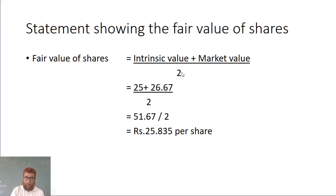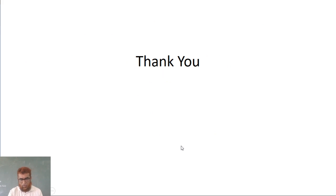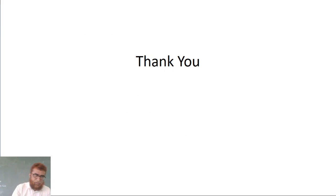The fair value per share is the average of net asset value and yield value: 25 plus 26.67 divided by 2, which equals 25.835. That is the final answer. Hope you have understood this solution. Thank you.